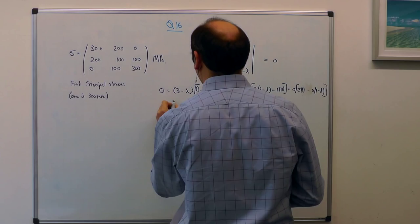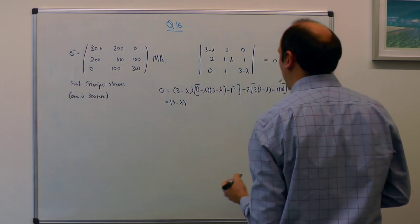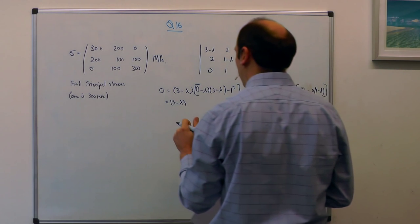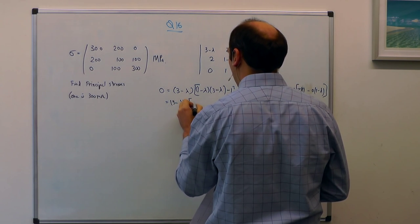So multiply that out. We have got 3 minus lambda. And because I know that 3 is going to be a factor, I am going to try and preserve my factor of 3 minus lambda here.